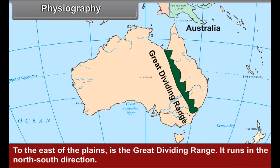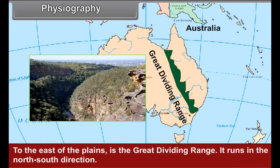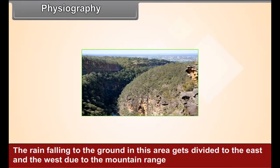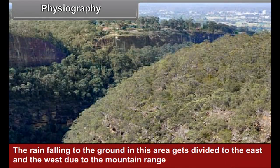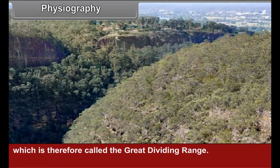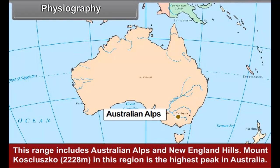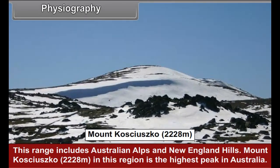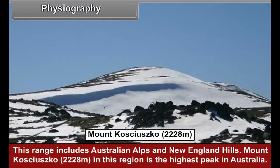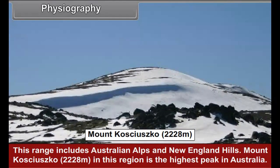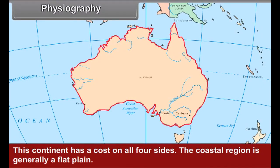To the east of the plains is the Great Dividing Range. It runs in the north-south direction. The rain falling in this area gets divided to the east and the west due to the mountain range, which is therefore called the Great Dividing Range. This range includes the Australian Alps and New England Hills. Mount Kosciuszko at 2228 meters is the highest peak in Australia.